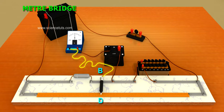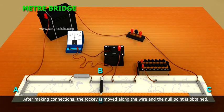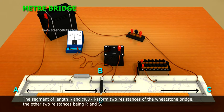and the cell is connected across AC. After making connections, the jockey is moved along the wire and the null point is obtained. The segment of length l1 and 100 minus l1 form two resistances of the Wheatstone bridge, the other two resistances being R and S.